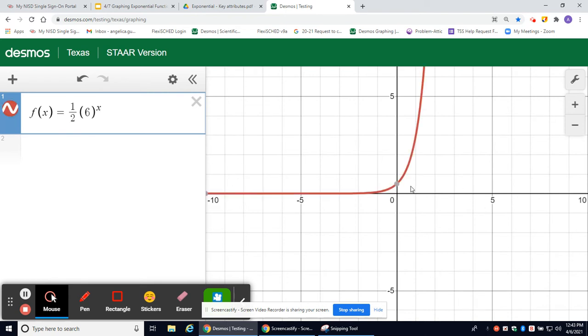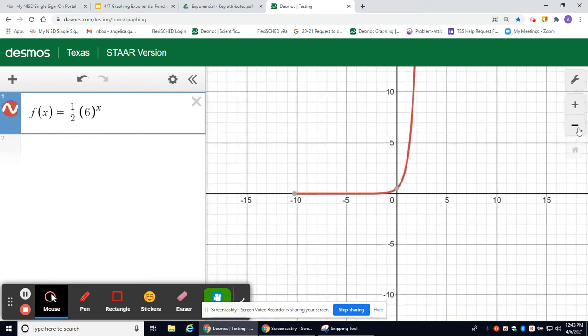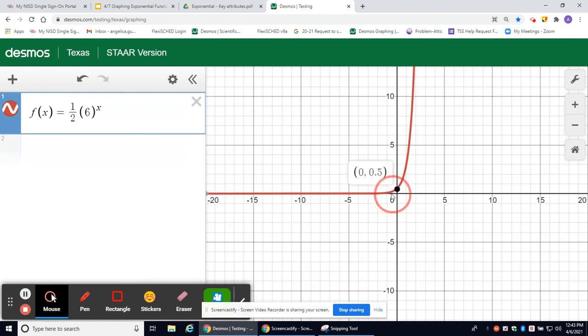Now you can see this graph, and you're going to see that it looks like it's touching the x-axis here. But as I drag my cursor, you'll notice it gets really close to 0 but never crosses or intersects.